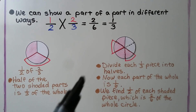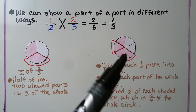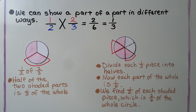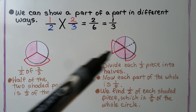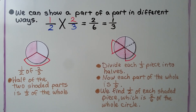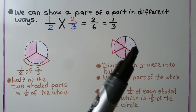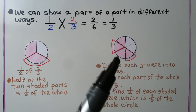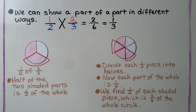We can also divide each one-third piece into halves — cutting each piece in half so that every part of the whole is now one-sixth. We have one-sixth going all the way around: six equal parts in total.